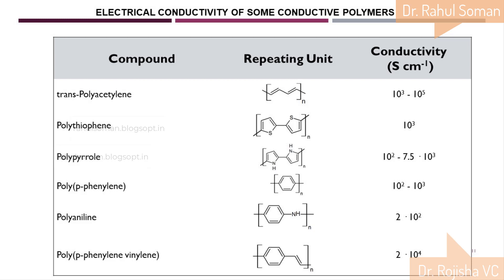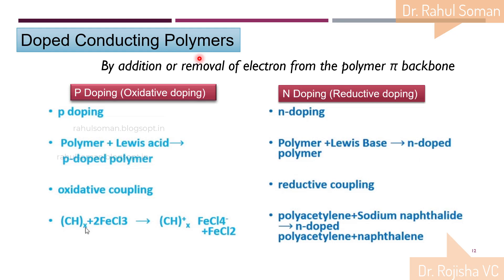Doped conducting polymers come in two types: p-doping, also called positive or oxidative doping, and n-doping, also called negative or reductive doping. In p-doping, the polymer is mixed with a Lewis acid, which gives a positively doped polymer.